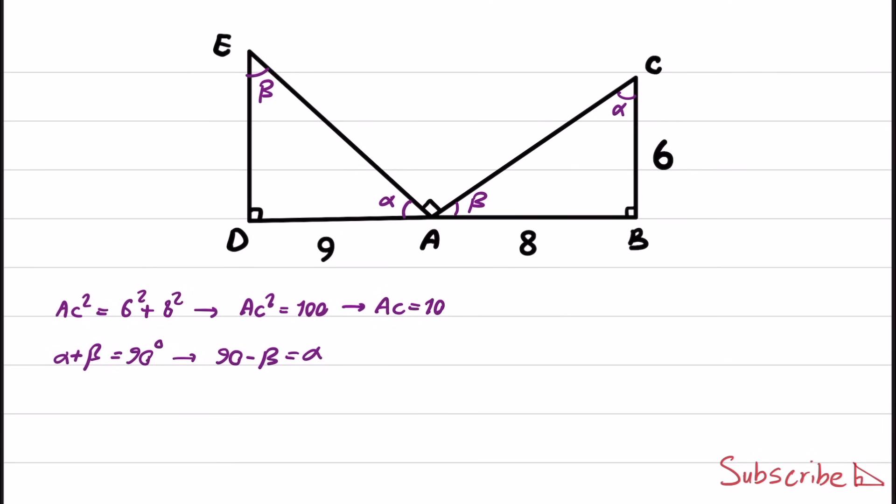If we write it down for these two triangles, we write 6 over 10 is equal to 9 over AE. And from this, we obtain AE is equal to 9 times 10 divided by 6, and AE is equal to 15.